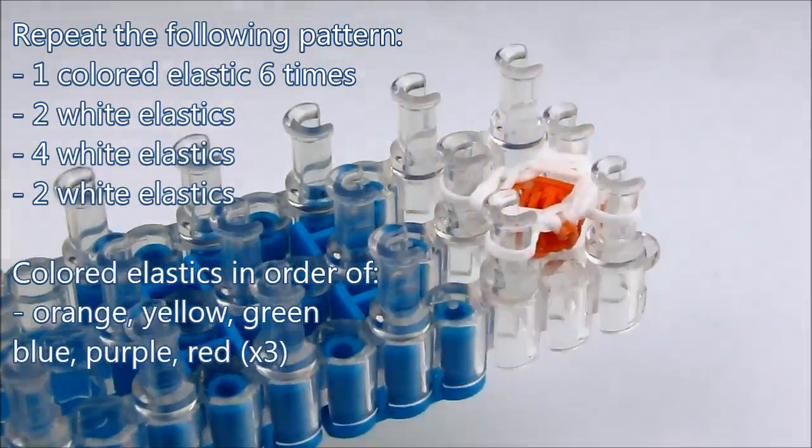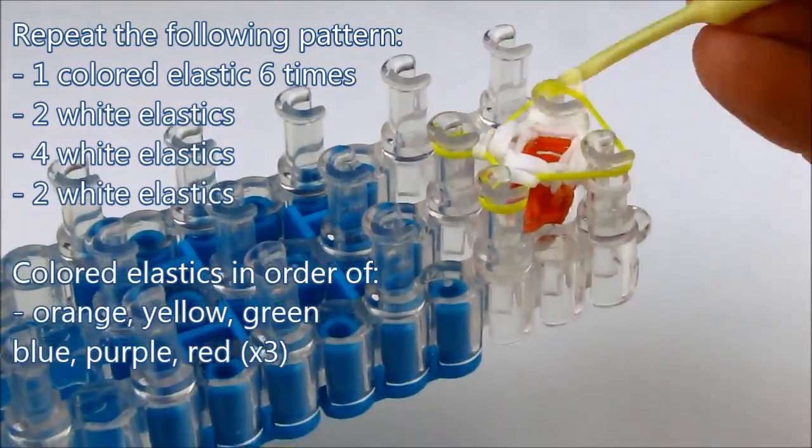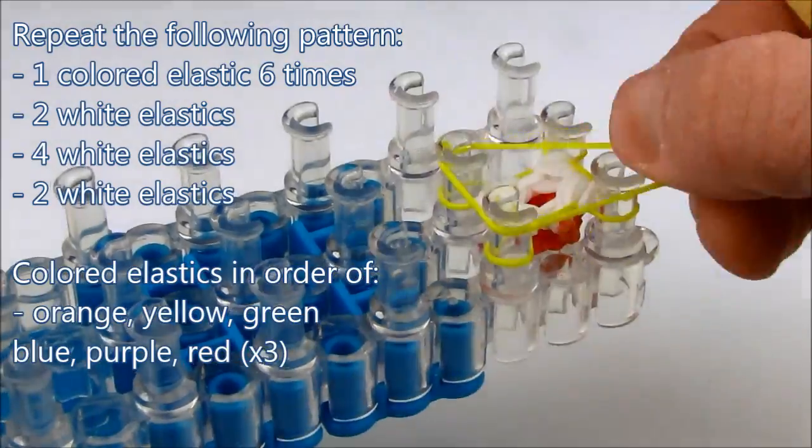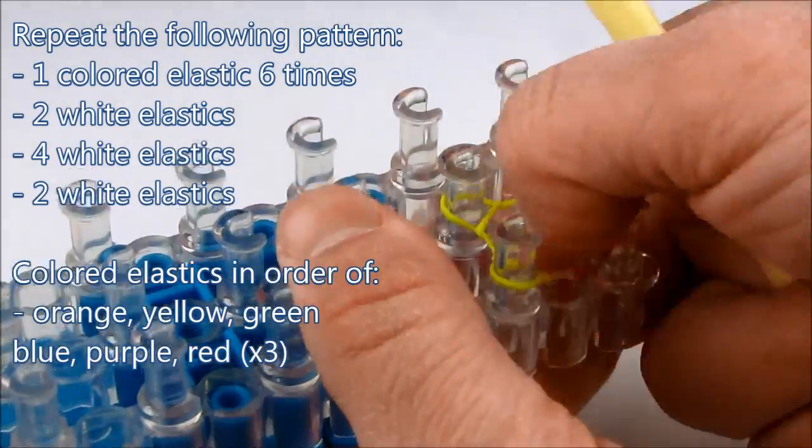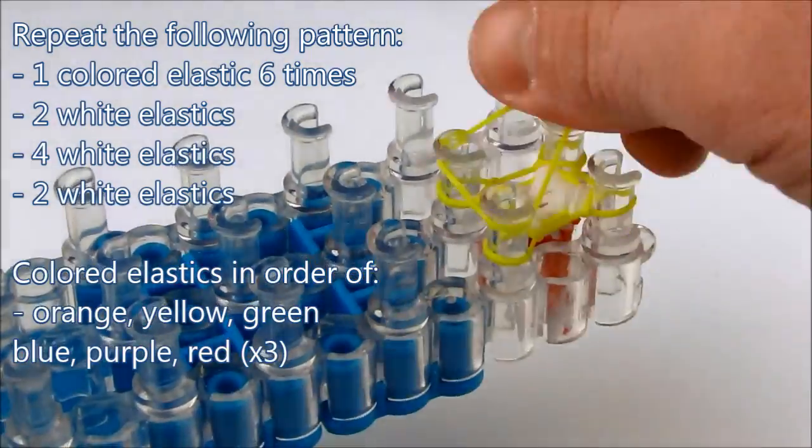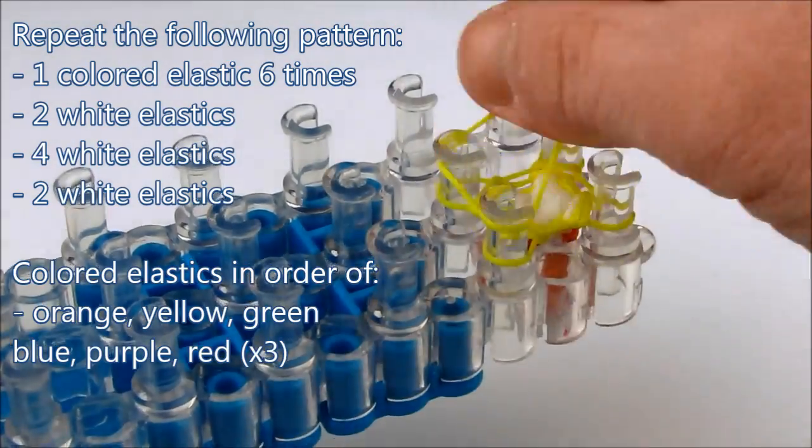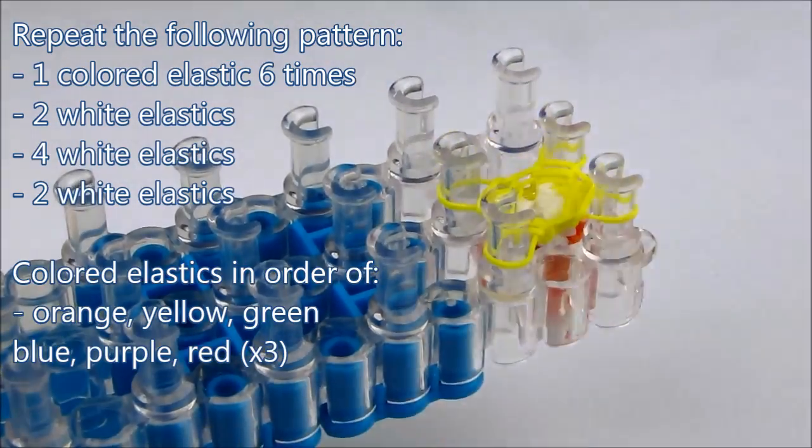And the colored elastics we're putting in on the pattern will be in the order of red which we've already done, then orange, yellow, green, blue, purple, and then we'll end up with the red again.